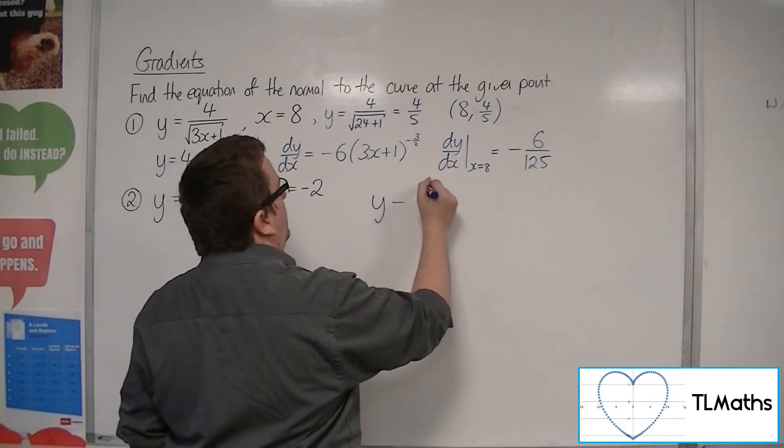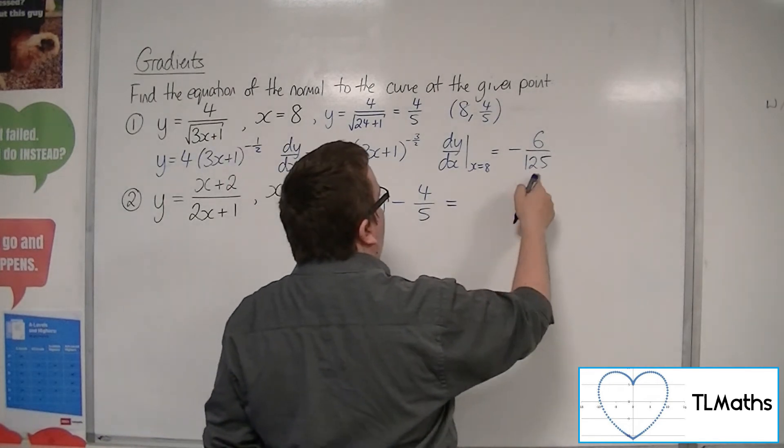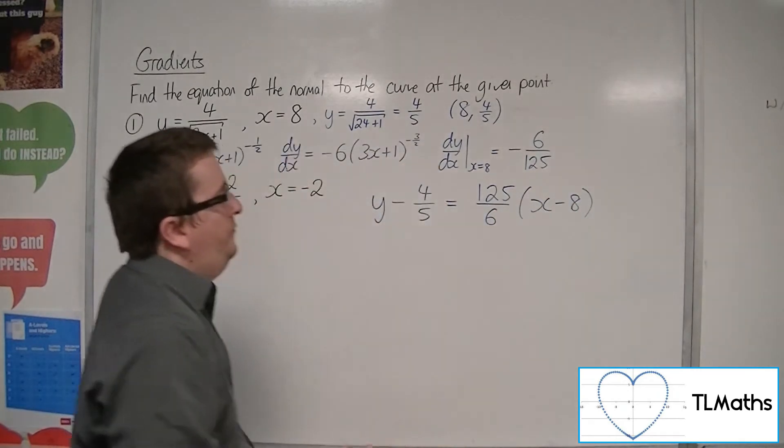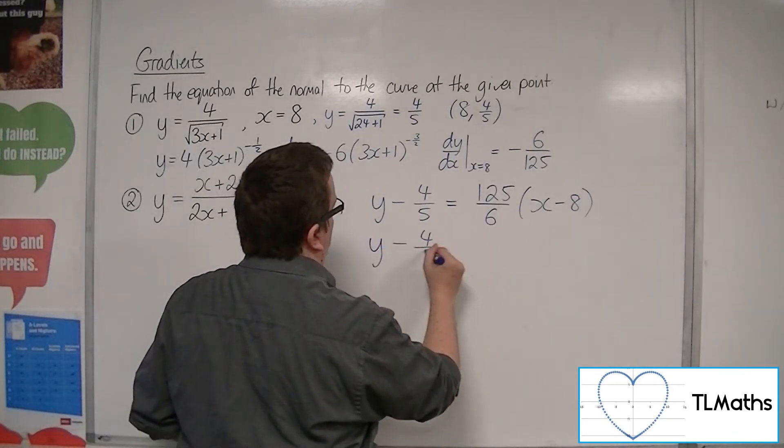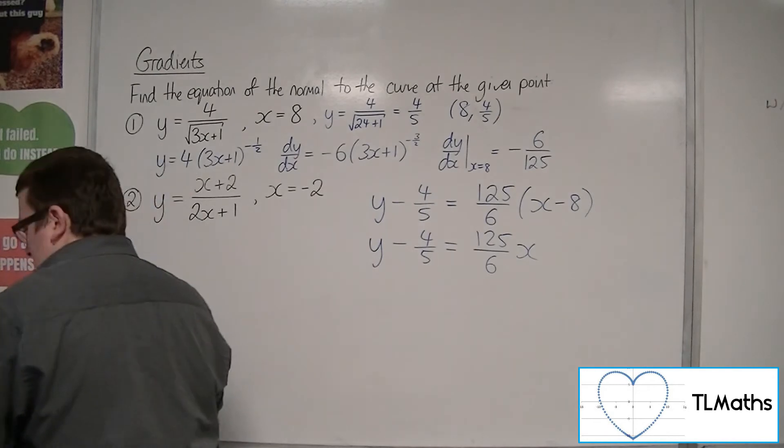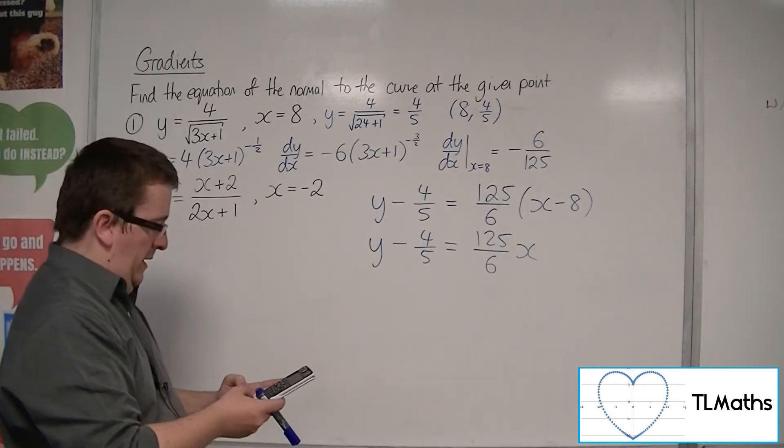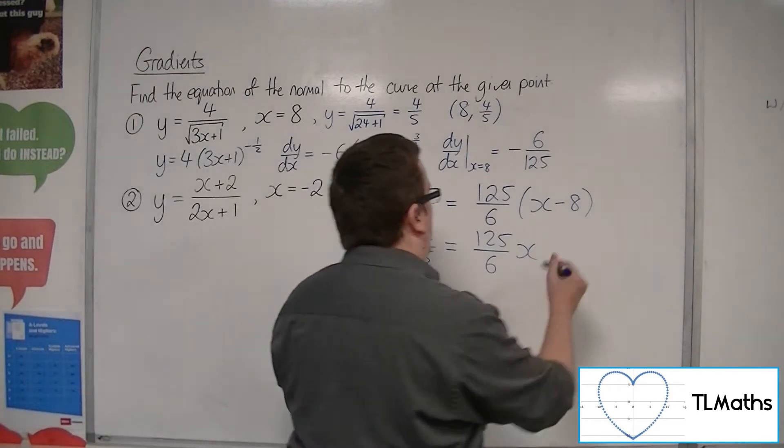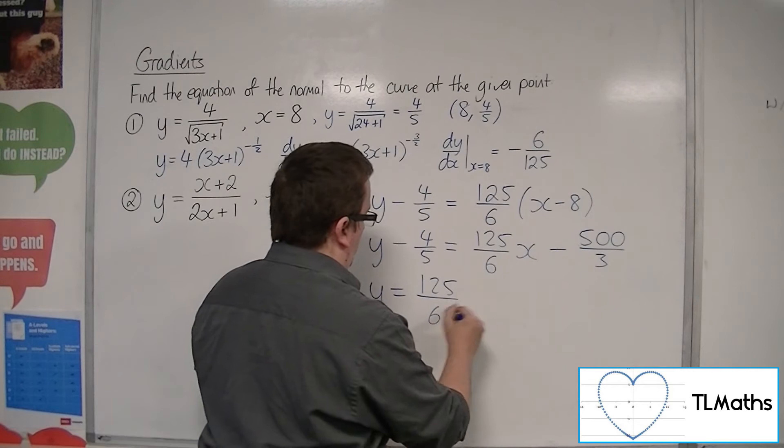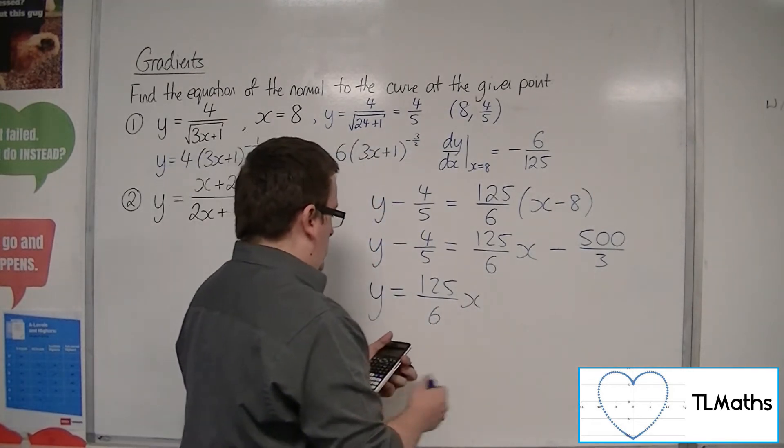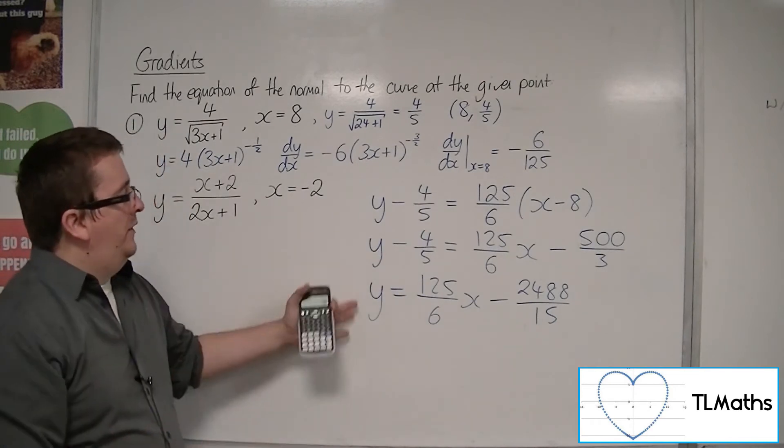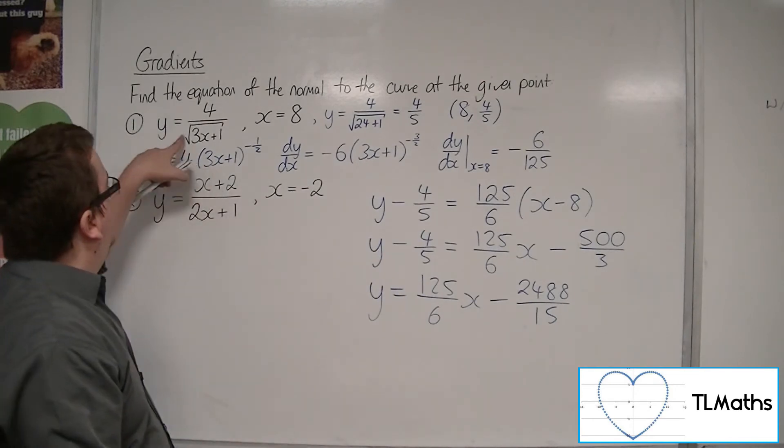So we're going to have y minus y₁, so y minus 4/5, is equal to the negative reciprocal of this, so 125/6 lots of (x - 8). So now I'm going to multiply out that bracket, 125/6 x. Then I've got this minus 8 times that, so minus 8 times by 125/6 is minus 500/3. Then I want to add the 4/5 to both sides. So I get minus 2488 over 15. So not particularly nice numbers there, but that's the equation of the normal to that curve at x equals 8.